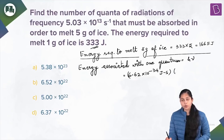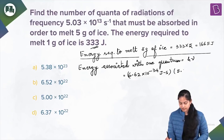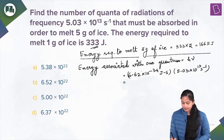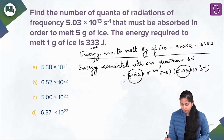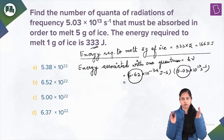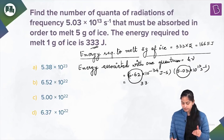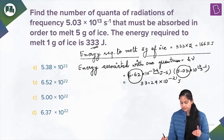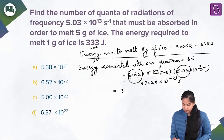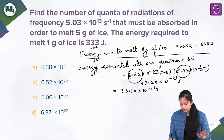The frequency given is 5.03 × 10¹³ s⁻¹. Multiplying 6.62 × 5.03 gives 33.29 × 10⁻²¹ joules, since −34 + 13 = −21. We can approximate this as 33.3 × 10⁻²¹ joules for the energy associated with 1 quantum.